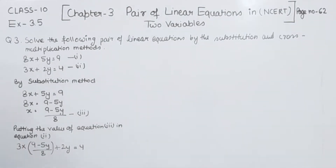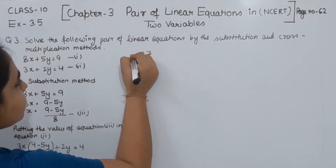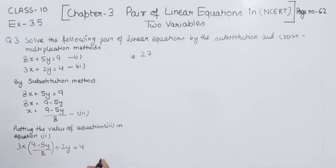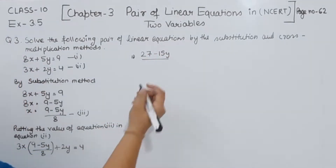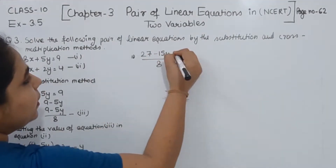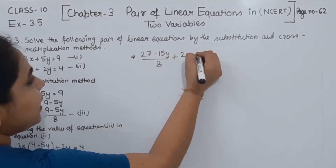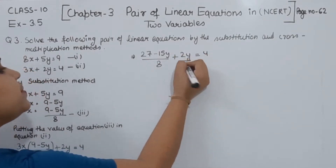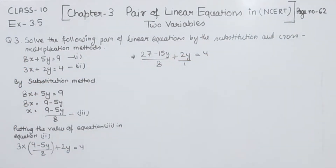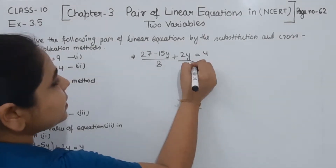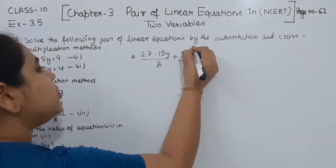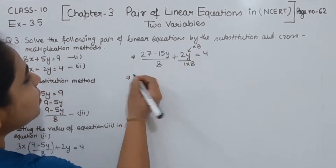3 times 9 is 27, and 3 times 5 is 15, so we have (27 minus 15y) over 8 plus 2y equals 4. The denominators are not the same, so we multiply 2y by 8 over 8 to make the denominator equal to 8. So we multiply both numerator and denominator.